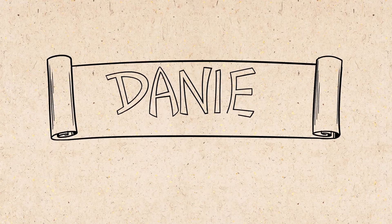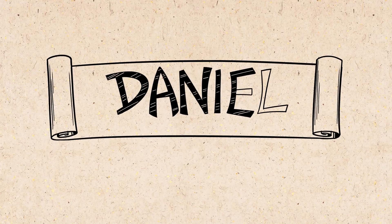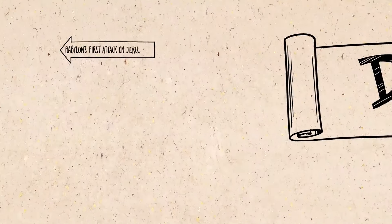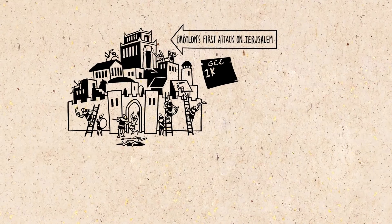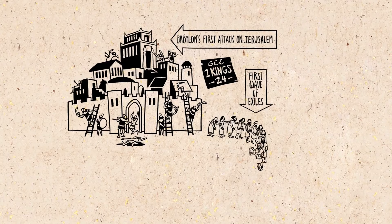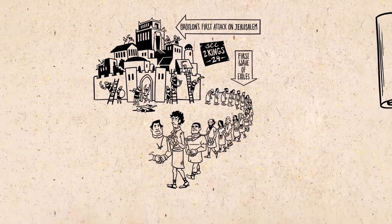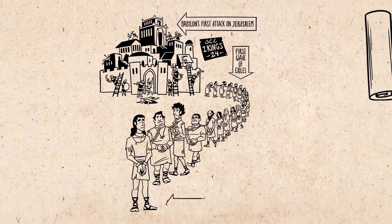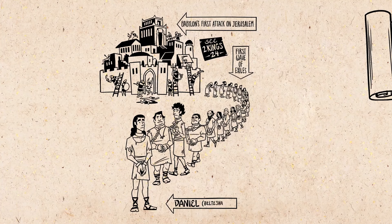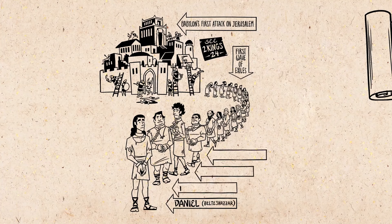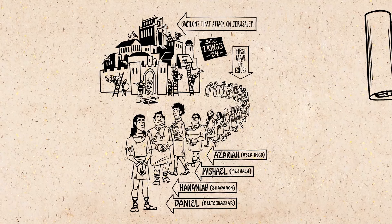The book of Daniel is a story set right after Babylon's first attack on Jerusalem. They had plundered the city and its temple and taken a wave of Israelites into exile. Among them were four men from the royal family of David: Daniel, who is later named Belteshazzar, and his three friends, who you probably know by their Babylonian names — Shadrach, Meshach, and Abednego. This book tells of their struggles to maintain hope in the land of their conquerors.